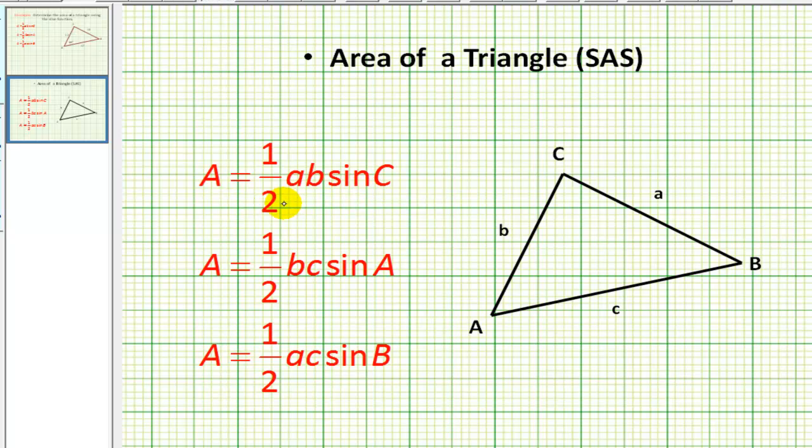For example, if we take a look at this first formula, we have the area equals 1/2 times A times B times sine C. So here's side A, here's side B, and here's angle C. Angle C is formed by side A and side B, or we can say it's the included angle.